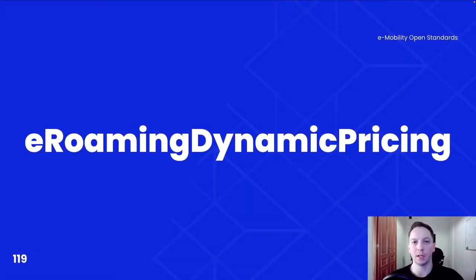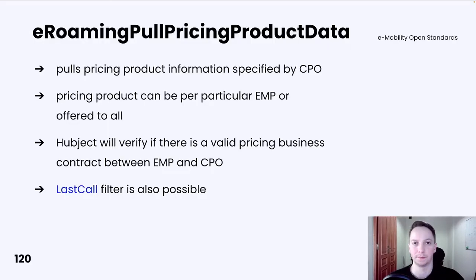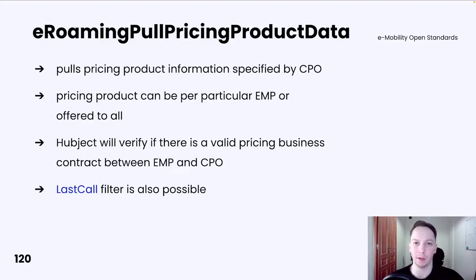eRoaming dynamic pricing service. When it comes to tariffs, Hubject offers EMPs the possibility to pull pricing product information specified by CPOs in their offers with the eRoaming pull pricing product data operation. Pricing products can be per specific EMP or offered to everyone. Hubject will verify if there is a valid pricing business contract between the EMP and CPO before any data is returned.